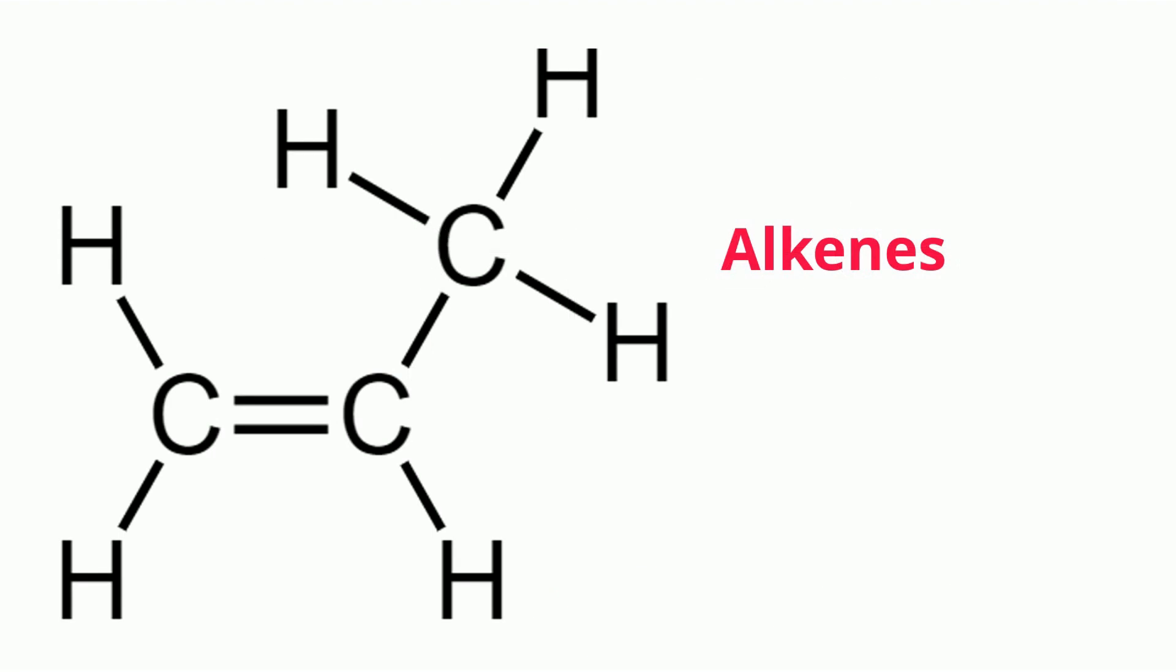Alkenes contain at least one double bond. The general formula is CnH2n. Let's take a look at an example. Propene is C3H6. For the hydrogen, you take 3 times 2, which equals 6.